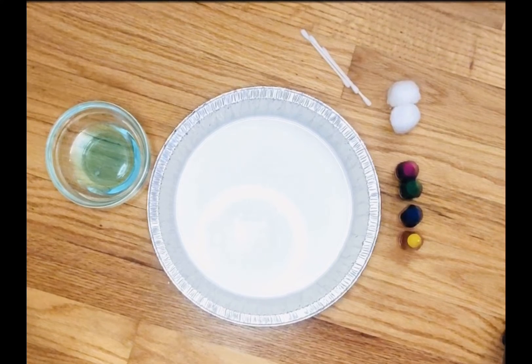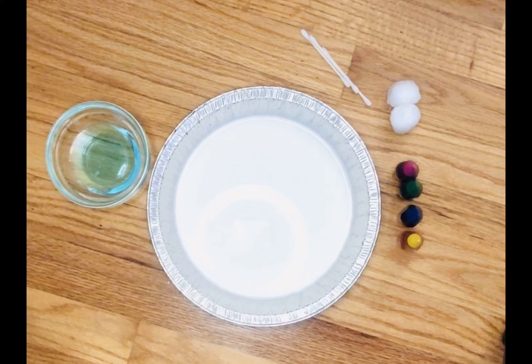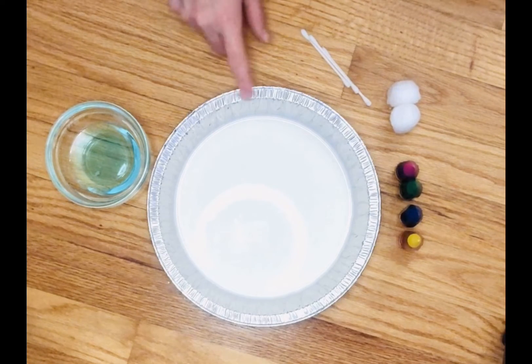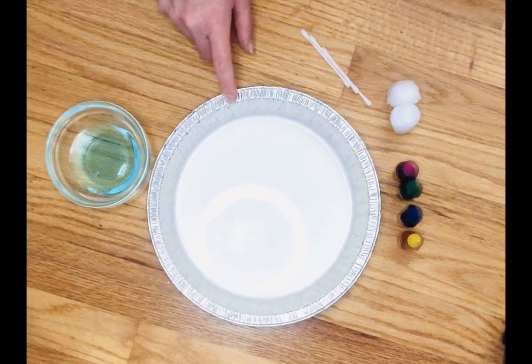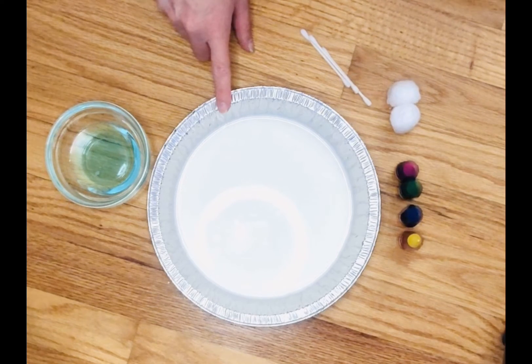The last experiment I am going to show you today friends is my rainbow magic milk experiment. For this one, again you will need a shallow pan, and I'm going to use a foil pie pan again. And you are going to fill it with about a quarter inch of milk.